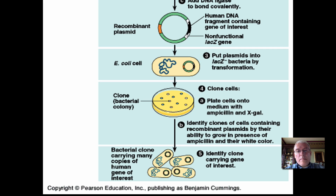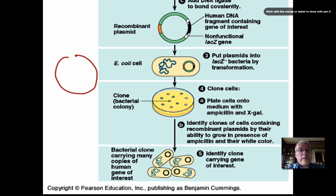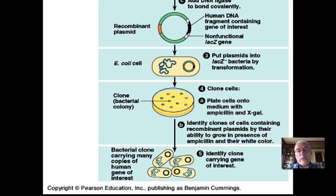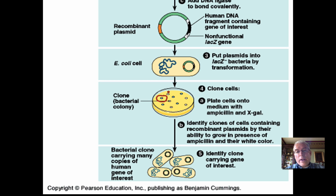Then we're going to put our hopefully transformed bacteria onto a clean agar plate and streak the plate — meaning we take a bacterial sample and rub it across the plate to spread them all over — and then incubate it to see which ones grow. On our plate, if everything works, because remember it contains ampicillin, we should get two different colors of colonies growing: blue colonies and white colonies.